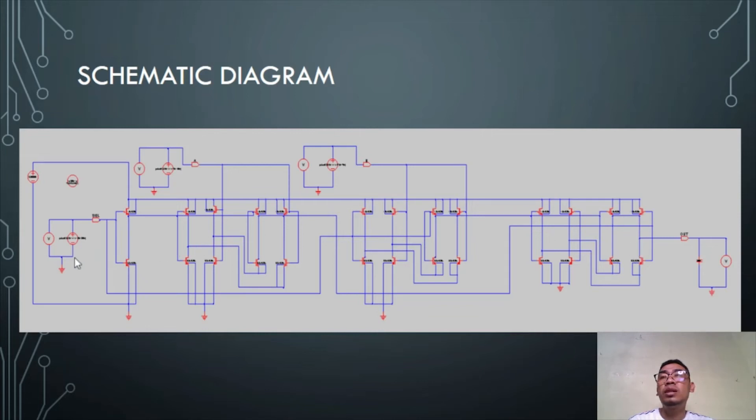On the SELECT, we have the inverter with a pulse using pulse 0, 3.3, 0 nanoseconds delay, 1 nanosecond rise time and fall time, 150 nanoseconds, which is the time when the pulse is on or the 50% duty cycle, and 300 nanoseconds period.